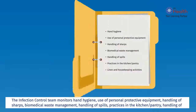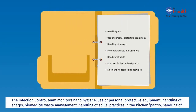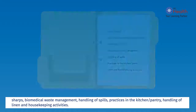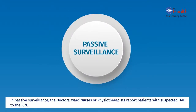The infection control team monitors hand hygiene, use of personal protective equipment, handling of sharps, biomedical waste management, handling of spills, practices in the kitchen or pantry, handling of linen and housekeeping activities. In passive surveillance,